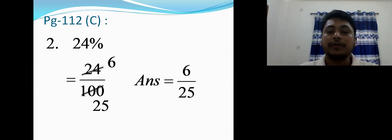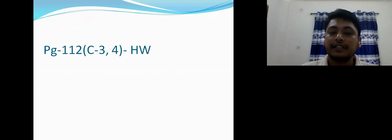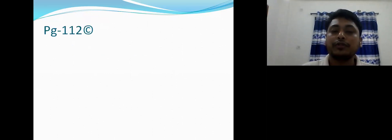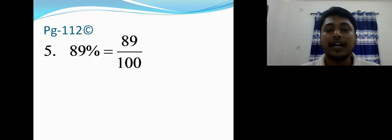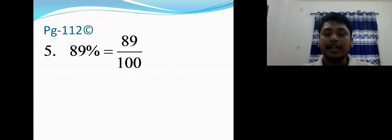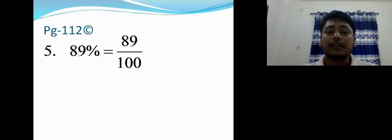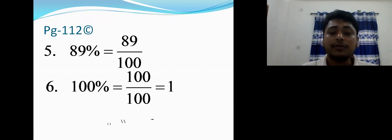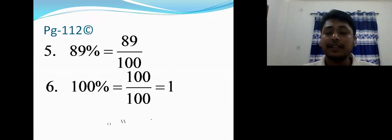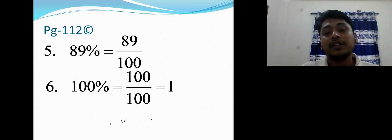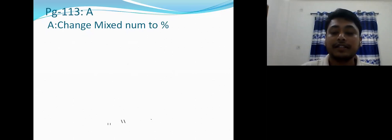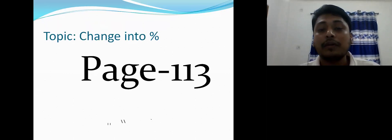Listen carefully — we divided by 4 here. Numbers 3 and 4 will be your homework. Number 5: 89 percent = 89/100 and it cannot be made lowest term further. Number 6: 100 percent = 100/100 — cancel up and down — equals 1. Thus page 112 is finished.